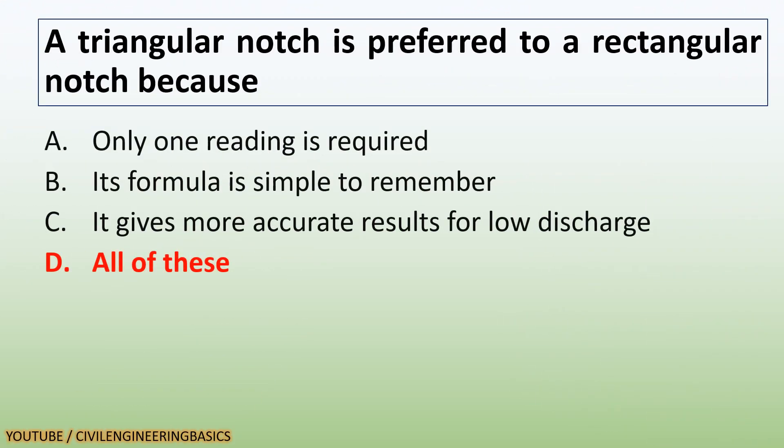A triangular notch is preferred to a rectangular notch because only one reading is required, its formula is simple to remember, and it gives more accurate results for low discharge.